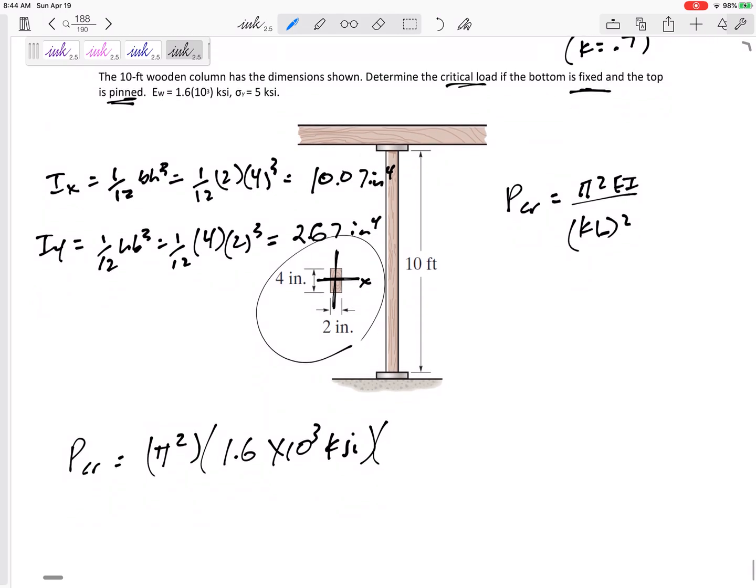So how is it going to buckle? Everything else constant, how is it going to buckle? It's going to buckle about the weak axis. It's going to buckle about this smaller 2.67, right? Because if I plug in 2.67 versus plugging in 10, this is going to give me a smaller force P. It'll already buckle about this axis before it will even think about buckling about the other axis. So use that smaller I if there's any choice.